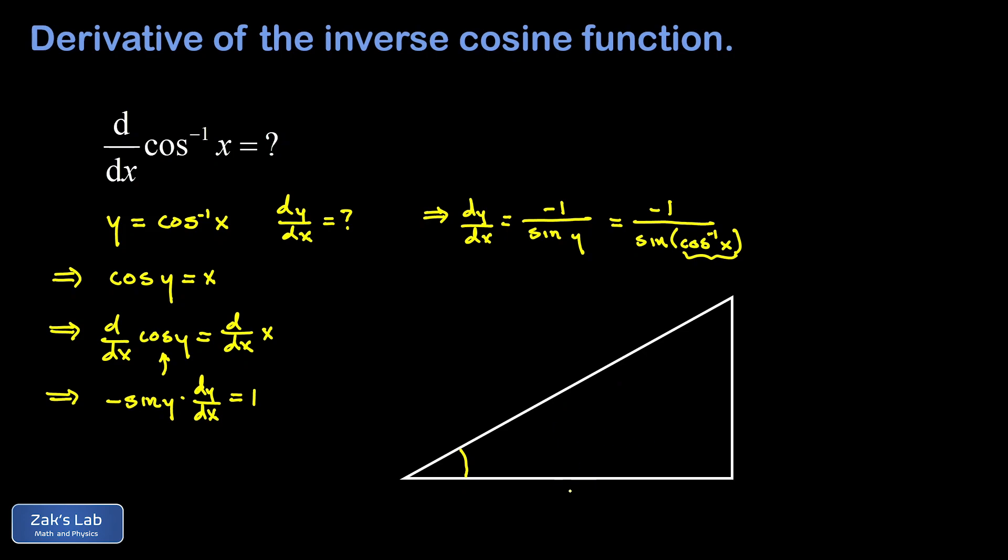Well if it's the angle whose cosine is x, then the adjacent over hypotenuse must be x. And the simplest way to do that is to make the adjacent side x and the hypotenuse 1.